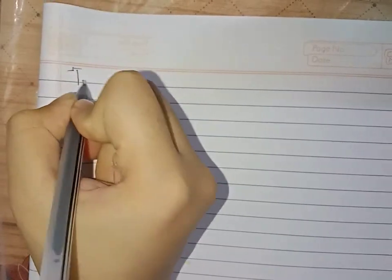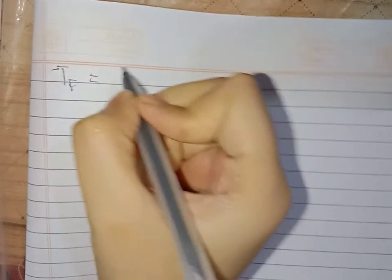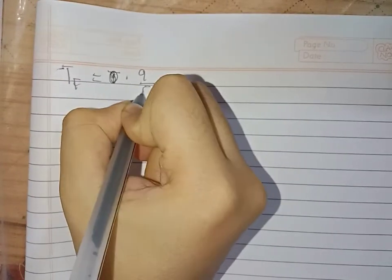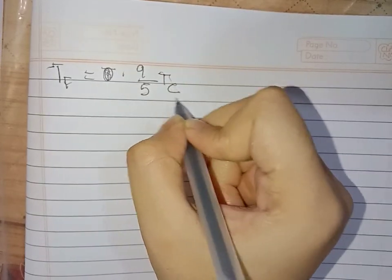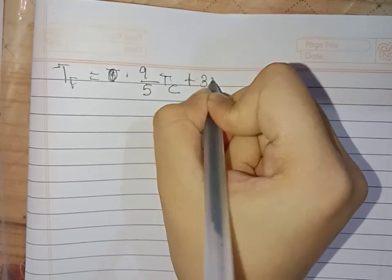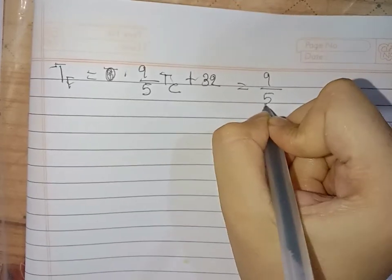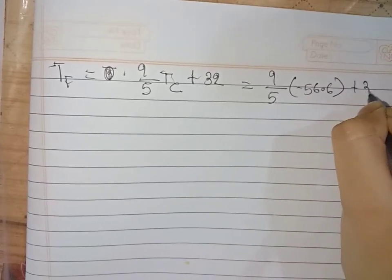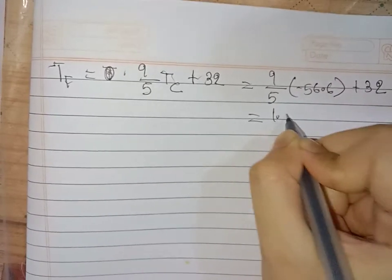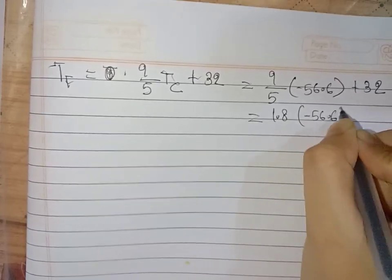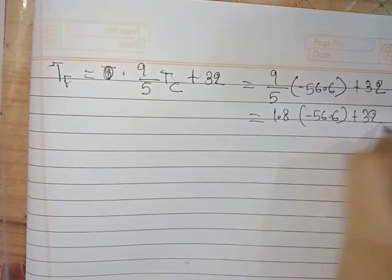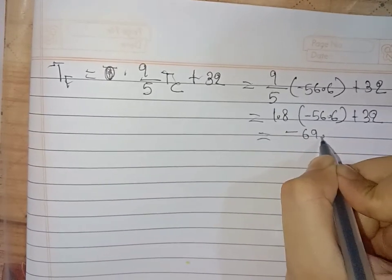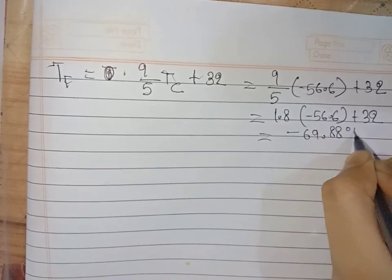Now converting to Fahrenheit: 9/5 times T_C plus 32, where T_C is minus 56.6. So 9/5, which is 1.8, times minus 56.6 plus 32 equals minus 69.88 degrees Fahrenheit.